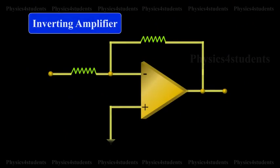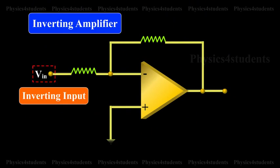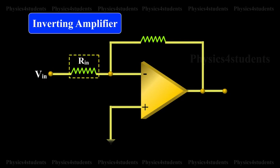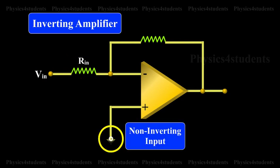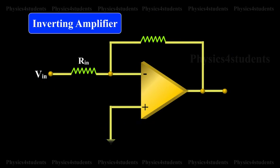Working of Inverting Amplifier. The basic Op Amp inverting amplifier is shown in the visual. The input voltage V is applied to the inverting input through the input resistor RIN. The non-inverting input is grounded. The feedback resistor RF is connected between the output and the inverting input.